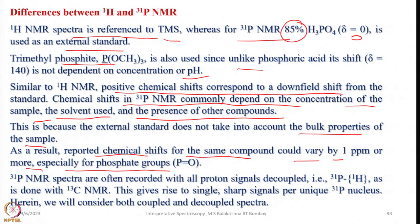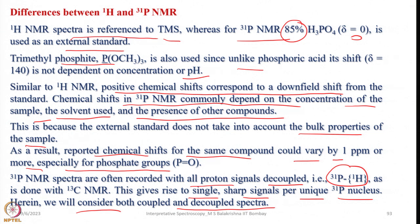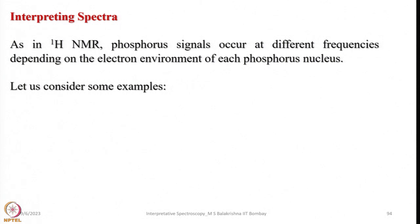31P NMR spectra are often recorded with all proton signals decoupled, very similar to the decoupling process used in 13C NMR. This gives single sharp signals per unique phosphorus, and P–P couplings can be seen up to 3, 4, or 5 bonds if the phosphorus nuclei are chemically and magnetically non-equivalent. The spectral interpretation is easy and very similar to 1H NMR, with phosphorus signals occurring at different frequencies depending on the electronic environment of each phosphorus nucleus.